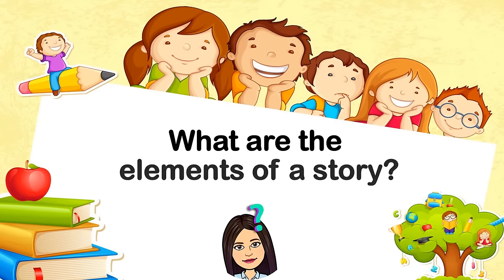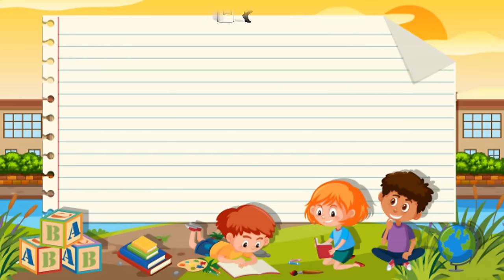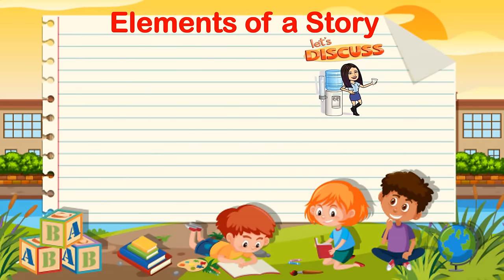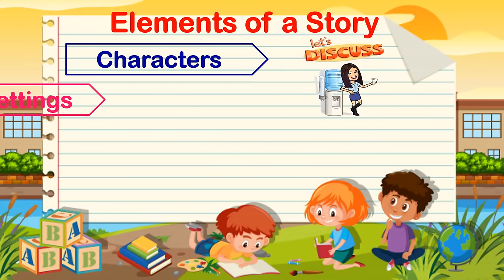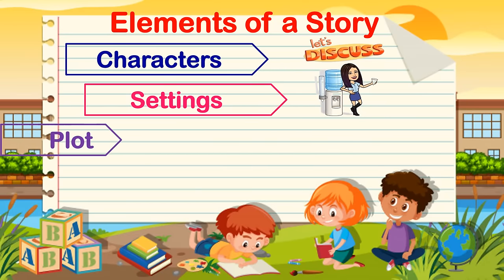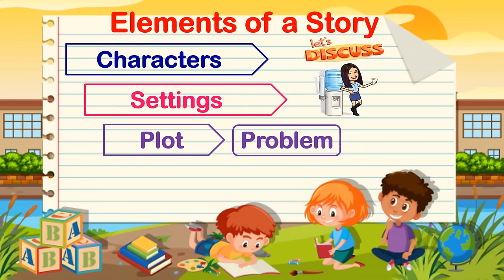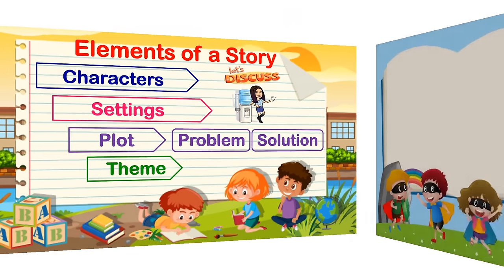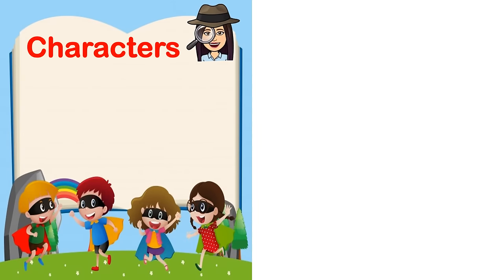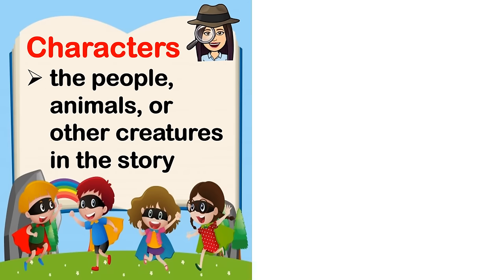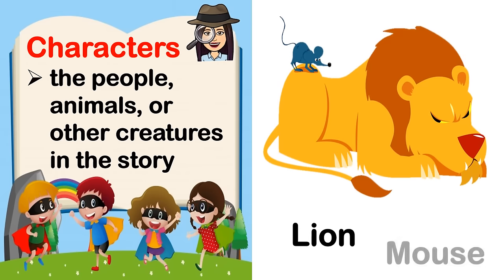What are the elements of a story? Elements of a story: Characters, Settings, Plot, Problem, Solution, Theme. Characters are the people, animals, or other creatures in the story. The characters in the story Lion and the Mouse are the Lion and the Mouse.